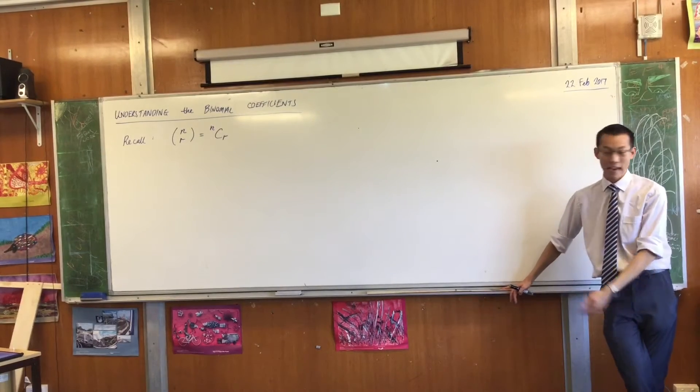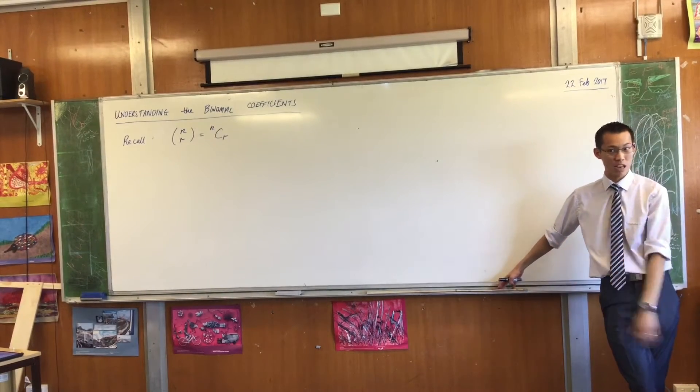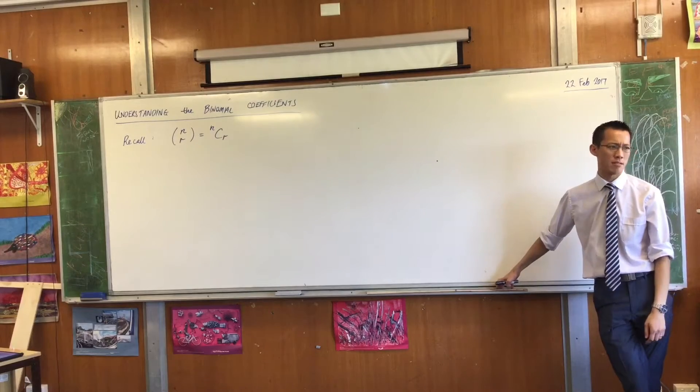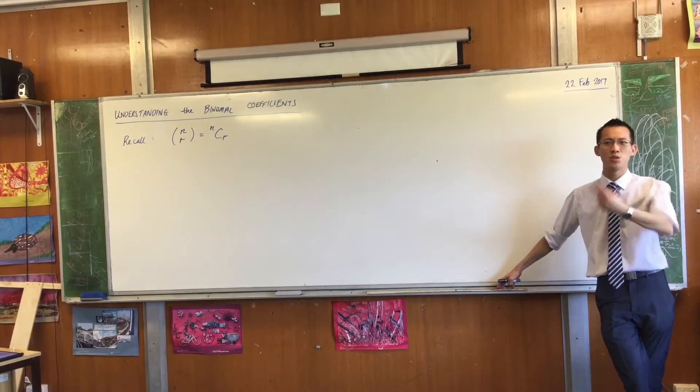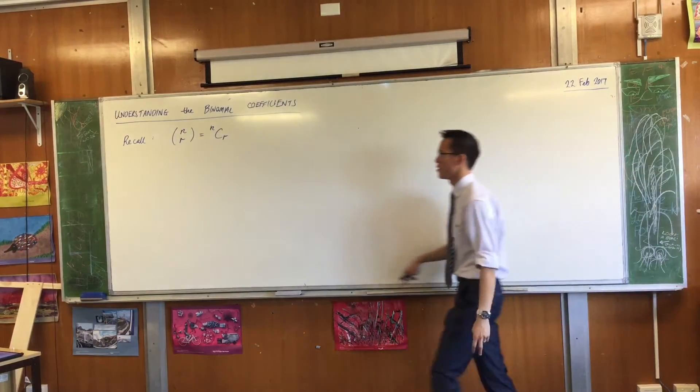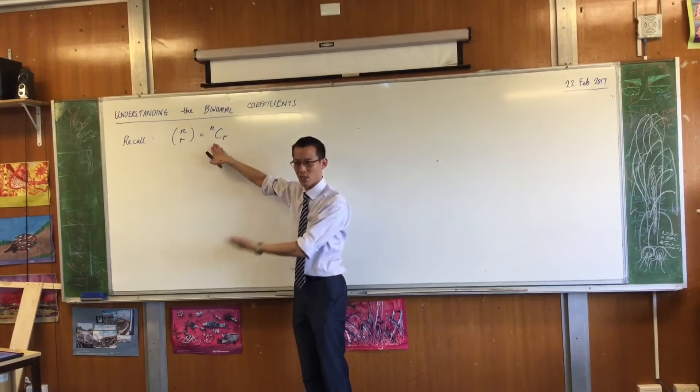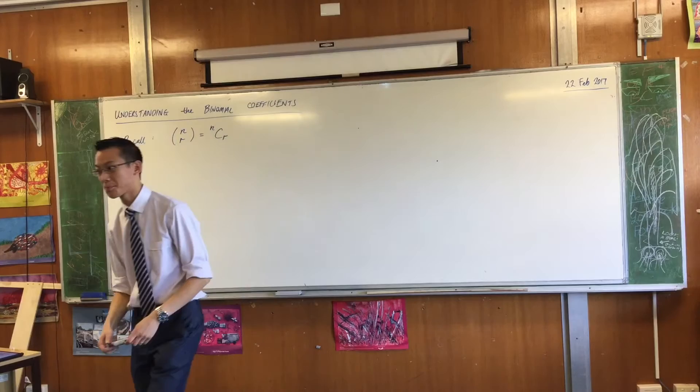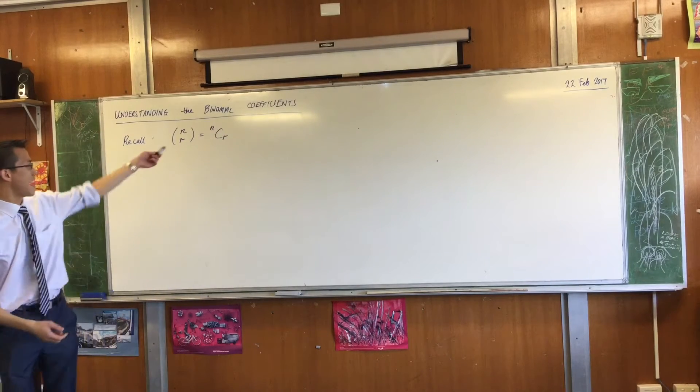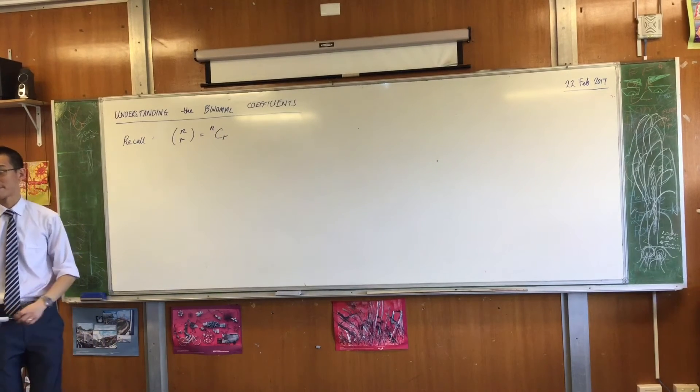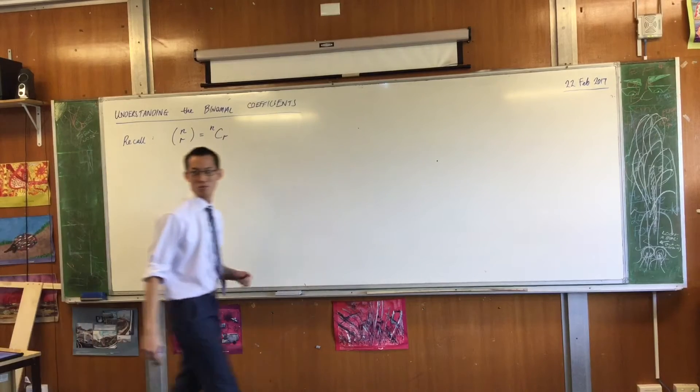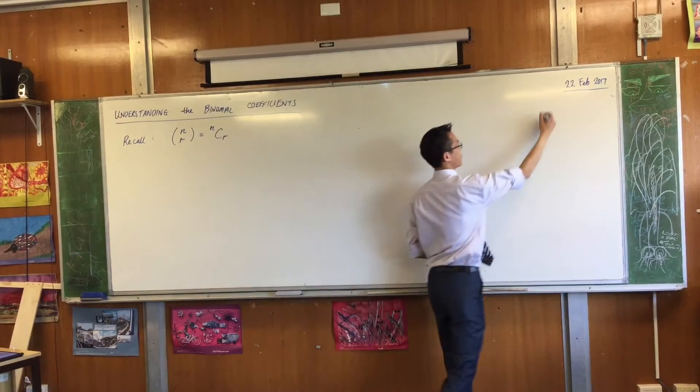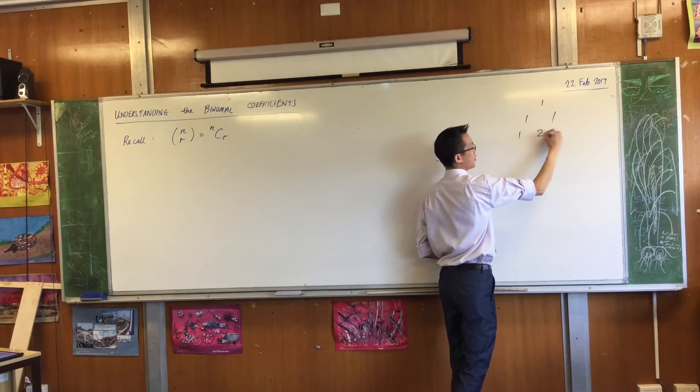All I've got written on the board is, remember this is the notation that we use. What does it mean? There are at least two ways you could describe what number this actually is when you put something in M and you put something in R. Any takers? What does that mean? Do you want me to give you a clue?